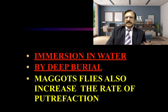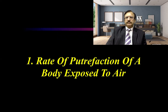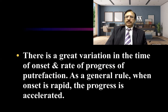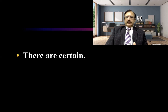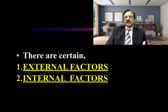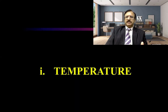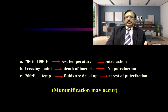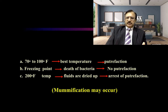Maggots and flies also increase the rate of putrefaction. There is great variation in the time of onset and the progression of putrefaction, but as a general rule, when the onset is rapid, the progression is also accelerated. Temperature is a key external factor: 70 to 80 degrees Fahrenheit is the optimum temperature for putrefaction. Freezing slows down or stops putrefaction entirely.